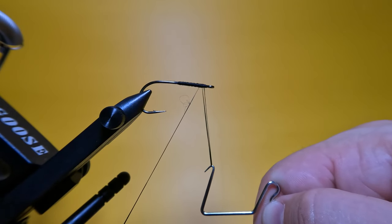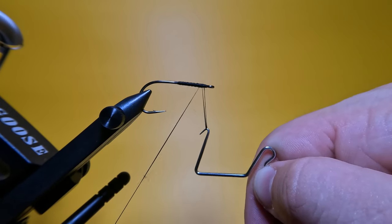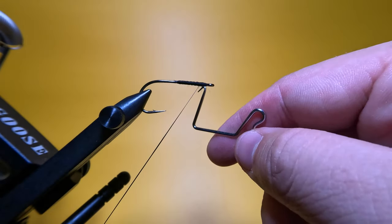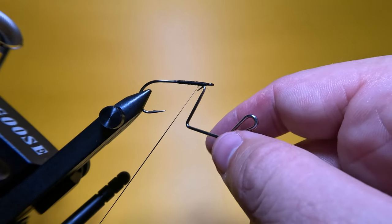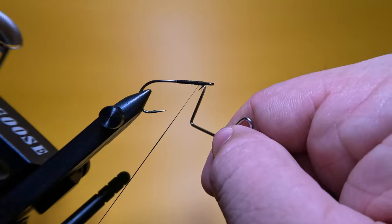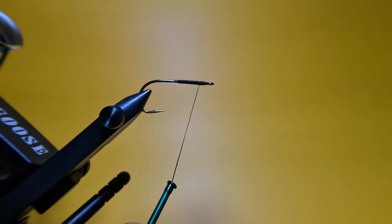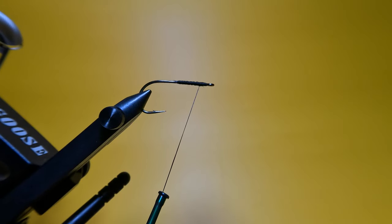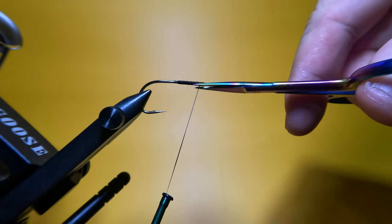And now while continuing to apply tension, we want to pull on our bobbin to close that loop all the way up to the top. And once the tapered hook of our whip finisher reaches the shaft of that hook, we can now slide it out. Now we'll just give a quick tug with our bobbin to tighten that knot down. And now to finish, we'll just snip our thread close to the shaft of that hook.